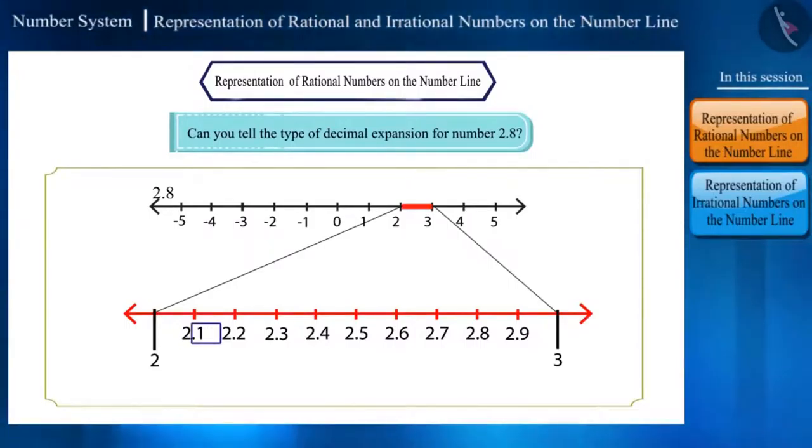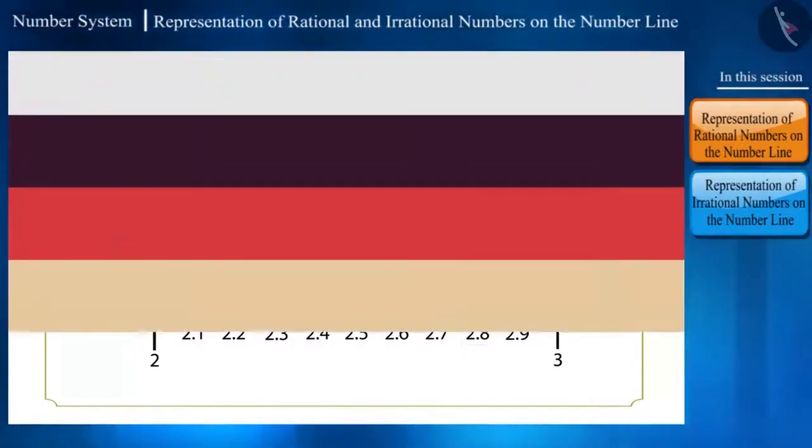Here, the first number is 2.1. The second is 2.2. And in this way, the last number 2.9. And the number 2.8 will be located here only.